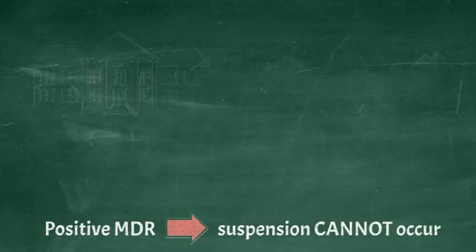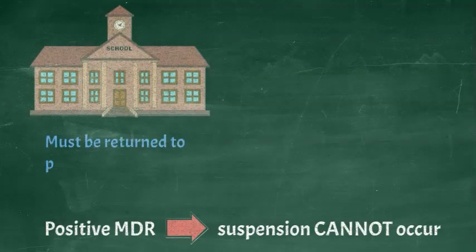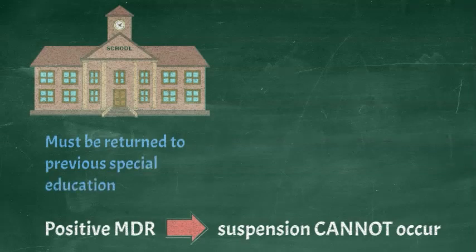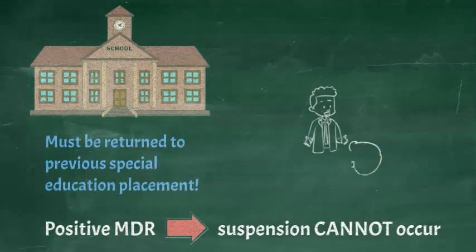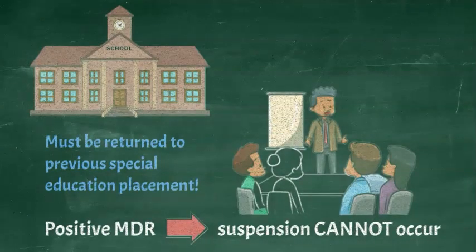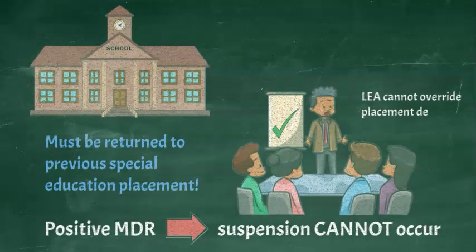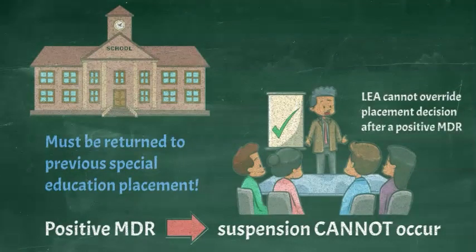If the MDR is positive and, therefore, the suspension cannot occur, the child must immediately return to school in the special education placement where they were prior to the suspension. The IEP team can only change the child's placement after a positive MDR if the parent and district agree to the change in placement. This is the only situation where the school cannot override a parent's objections to a placement change. Usually, if the IEP team does not agree on a placement, the district makes a final decision — but that is not true after a positive MDR.